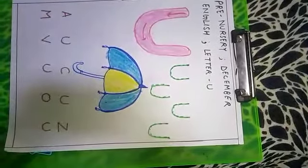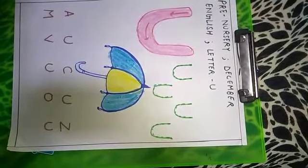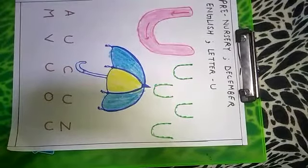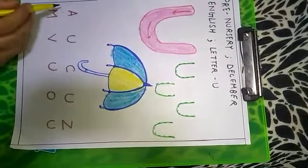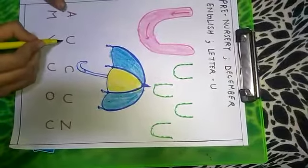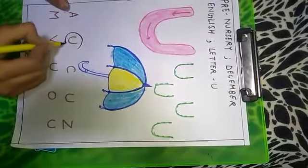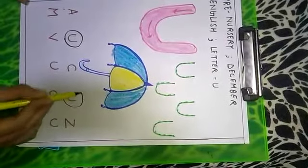Here are some alphabets. So let's find the alphabet U and circle it. Is this letter U? No. This is letter A. This is letter U. Let's circle it. U.